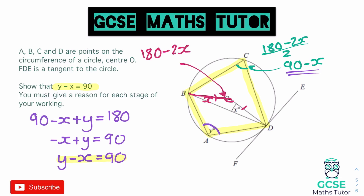There are lots of different ways to approach this question. You could use the alternate segment theorem — the angle where the tangent meets the circle is also going to be Y. You could use the fact that the radius meets the tangent at 90 degrees, looking at angle ODF. You could also find the reflex angle at the centre like in a previous question, and halve it to find Y. Any fully correct method reaching Y minus X equals 90 is valid.